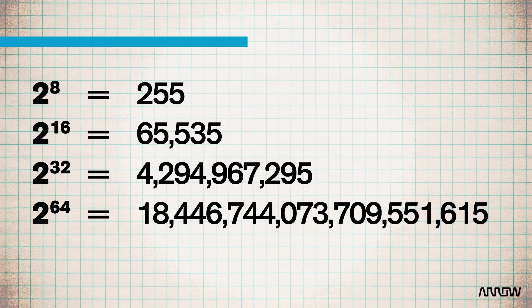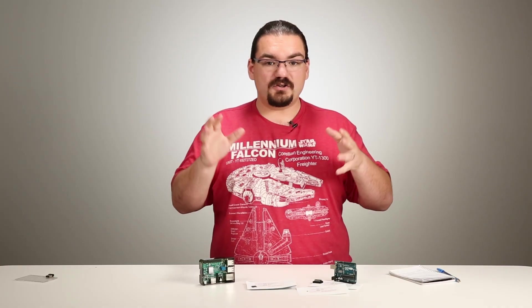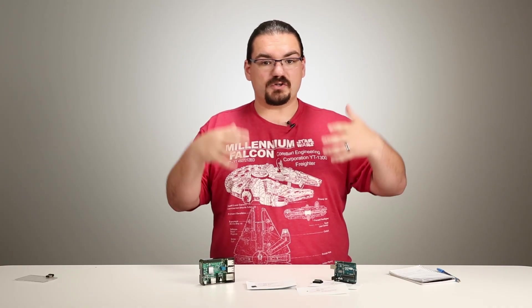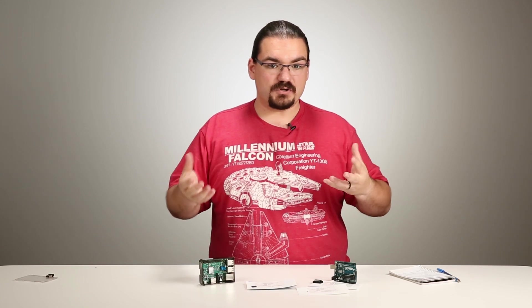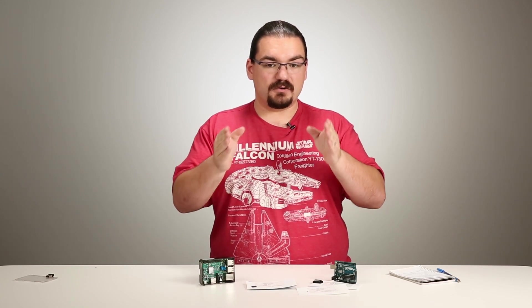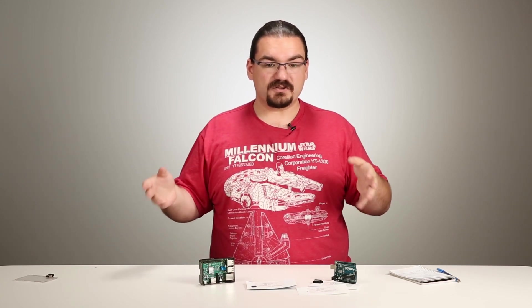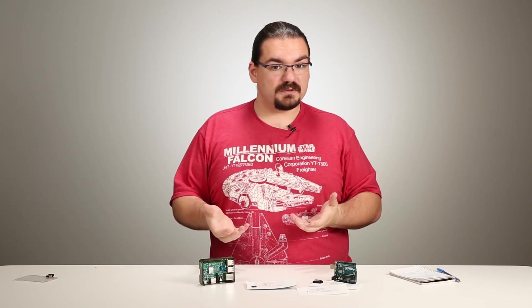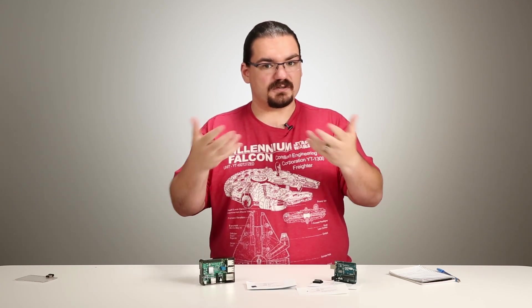If you move up to 32-bit you're in the 4.3 billion range. So as you want to work on larger and larger numbers, you actually need greater register width so you can actually deal with them — or register length.